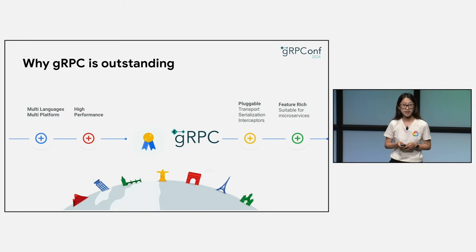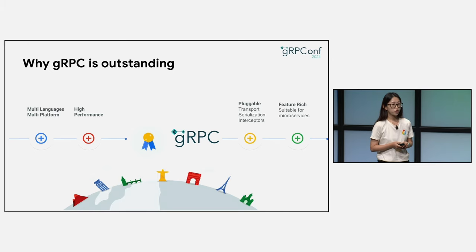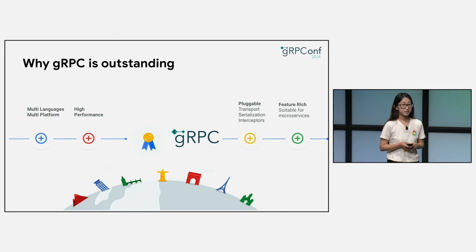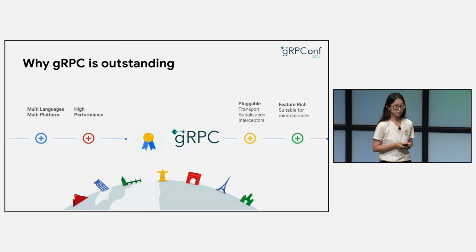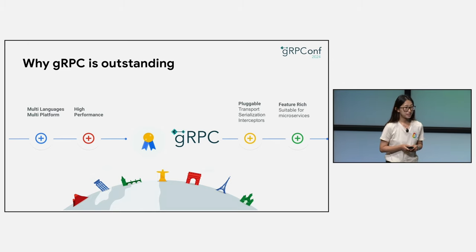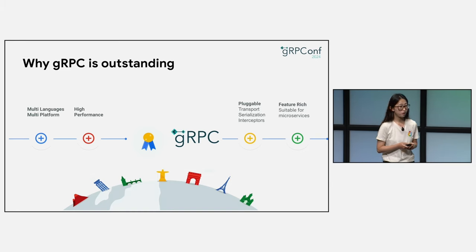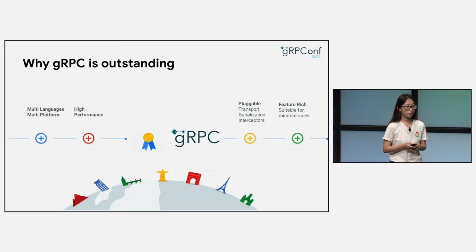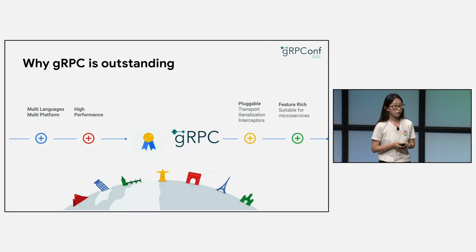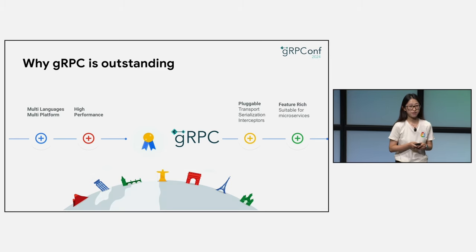gRPC is popular because it is suitable for many needs. In addition to being available across a wide range of platforms and languages, the performance is industry-leading — it is blazing fast and incredibly efficient, connecting your applications and services in a very reliable and smooth way. Many components in gRPC are designed to be pluggable: there are different transports suitable for different devices and environments, you can specify serialization, wire format, or interceptors, making integration with your development stack very efficient and flexible.